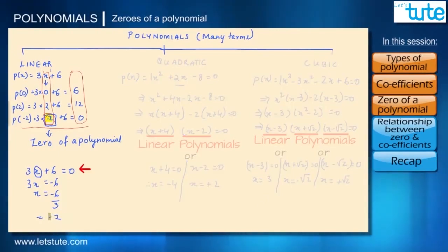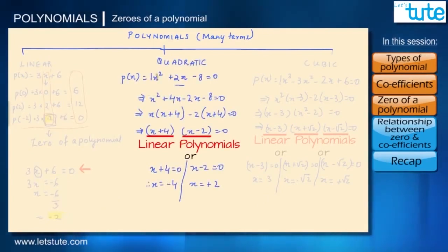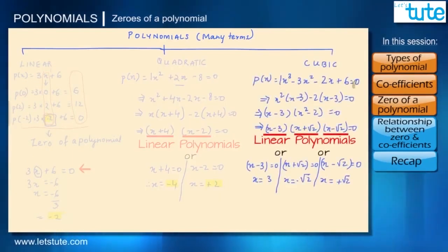The zeros of linear polynomial 3x plus 6 is minus 2. The zeros for quadratic polynomial x square plus 2x minus 8 is minus 4 and plus 2. And for this cubic polynomial, the zeros of the polynomial are 3, minus root 2 and plus root 2.